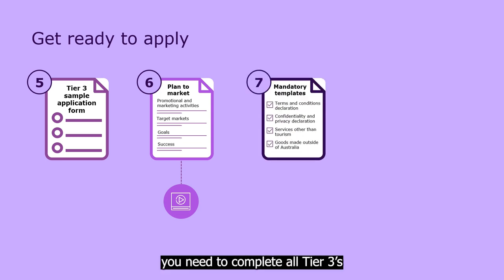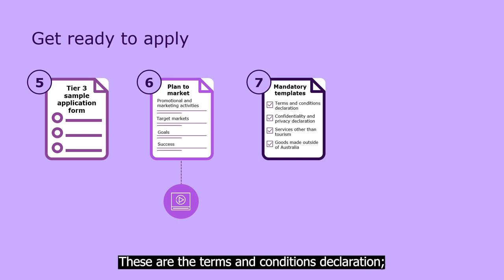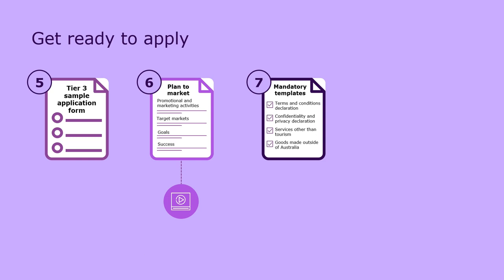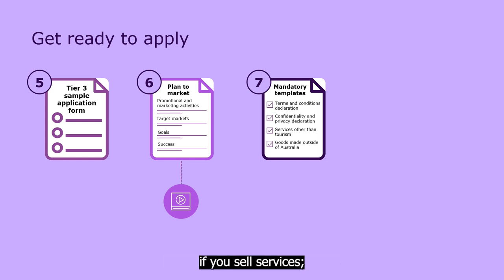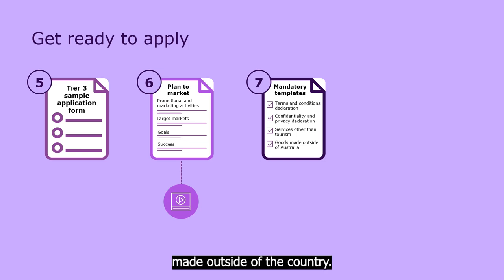For step seven, you need to complete all Tier 3's mandatory templates and reading. These are the Terms and Conditions Declaration, Confidentiality and Privacy Declaration, the Services Other Than Tourism Attachment if you sell services, and the Goods Made Outside of Australia Attachment if you're marketing goods made outside of the country. You'll find them all on the website.